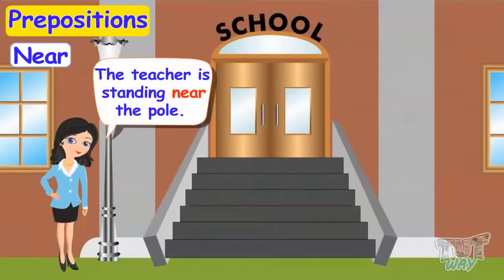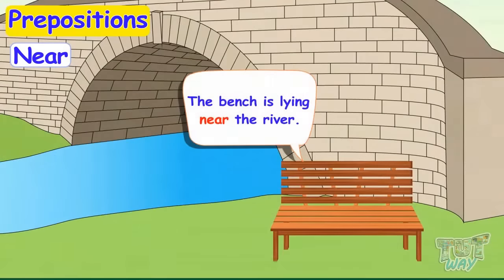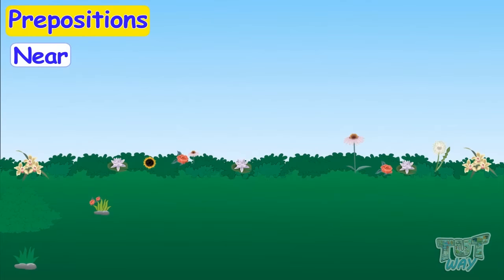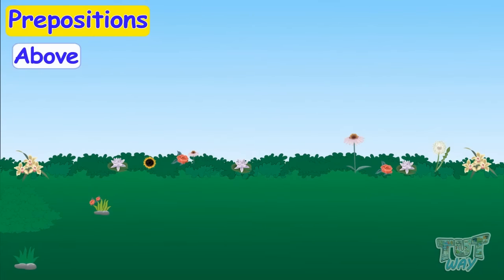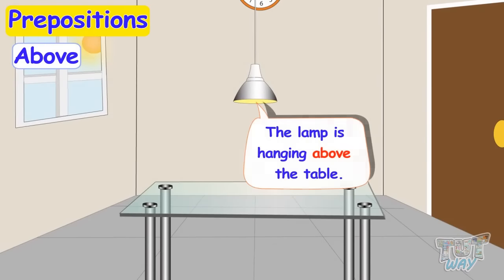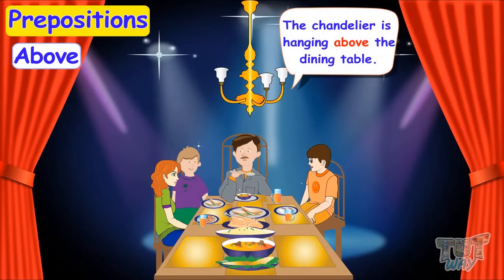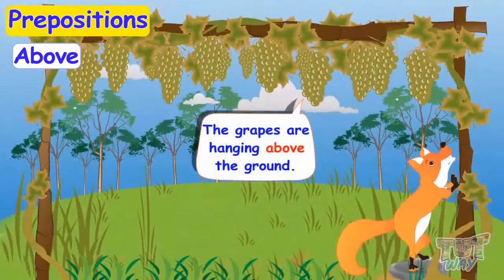The teacher is standing near the pole. The bench is lying near the river. Our next preposition is 'above'. The lamp is hanging above the table. The chandelier is hanging above the dining table. The grapes are hanging above the ground.